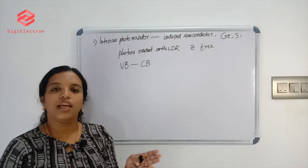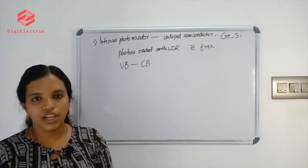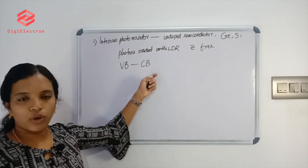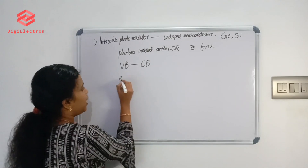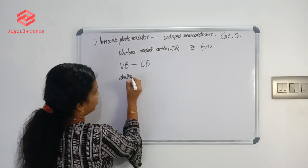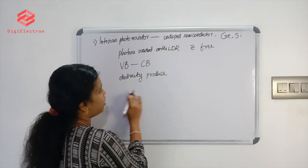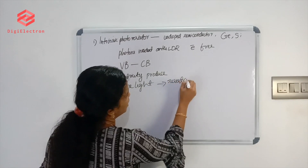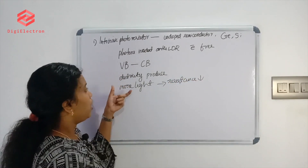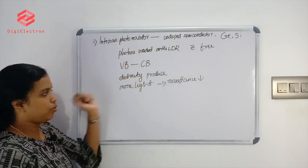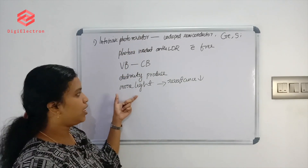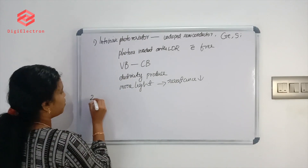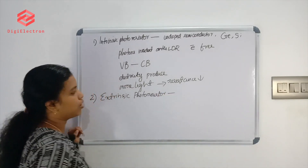When light is incident, electron bonds break, electricity is produced. As more light increases, the lighting level rises and resistance decreases. This is the Intrinsic Photoresistor.